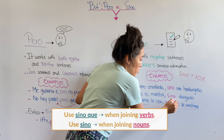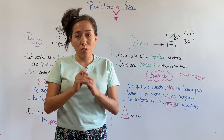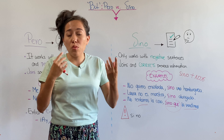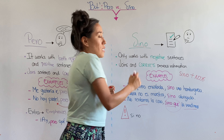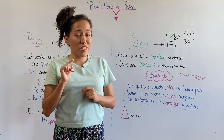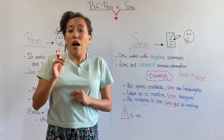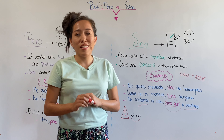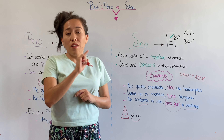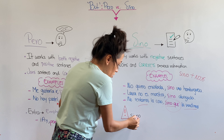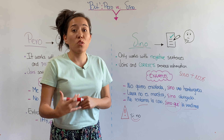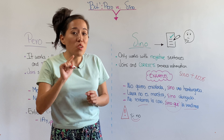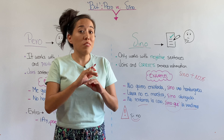Example three — pay attention to this one because it's important: 'no rentamos la casa sino que la vendimos' — we didn't rent the house but rather we sold it. 'Sino' can work with nouns, but if you're contrasting verbs, like in example three, you have to use the relative pronoun 'que' — 'sino que'. This form is only used when you are joining verbs.